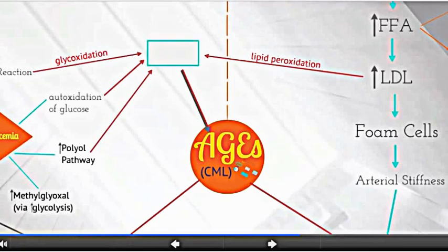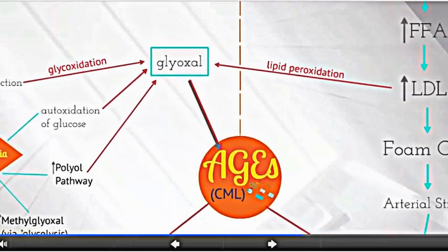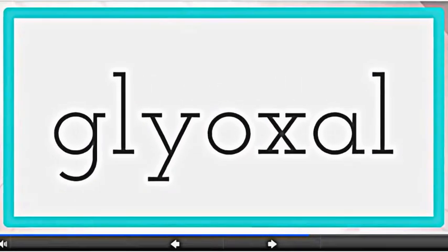Each of these mechanisms has a central AGE precursor in common: the reactive carbonyl glyoxal. A build-up of these reactive carbonyls is sometimes referred to as carbonyl stress.